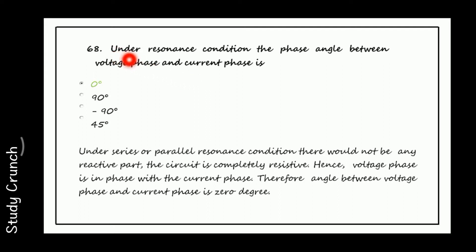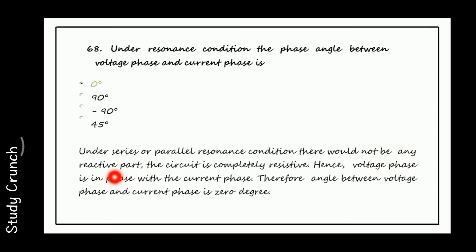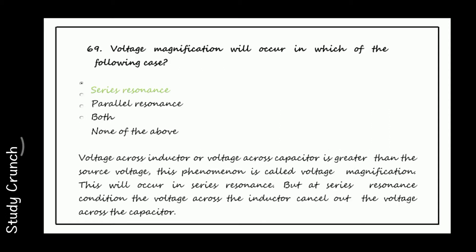Next, under resonance condition, what is the phase angle between voltage and current? It is 0 degrees. Under resonance condition there is no reactive part; the circuit is completely resistive, so voltage phase is in phase with the current phase. Therefore the angle is 0 degrees.